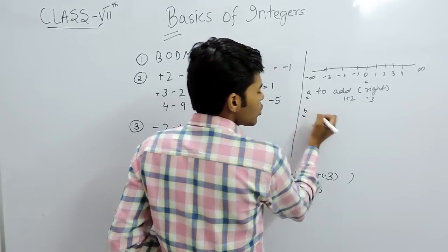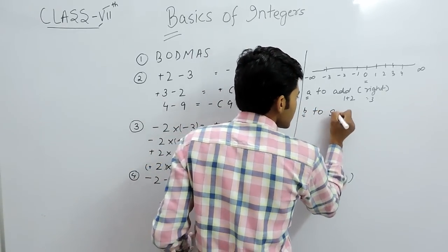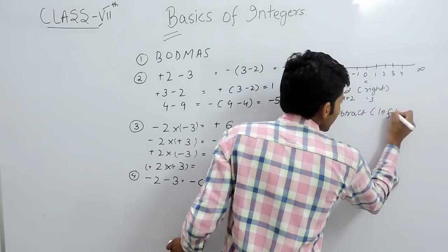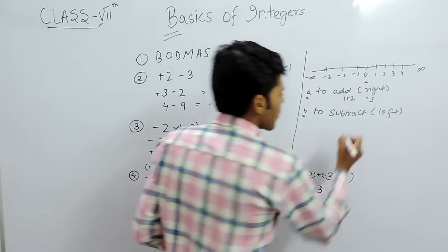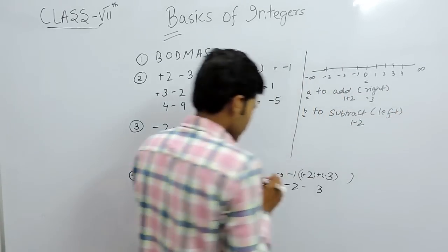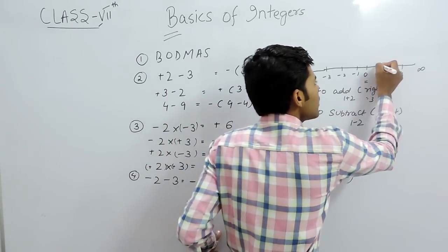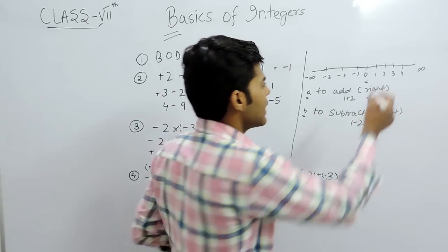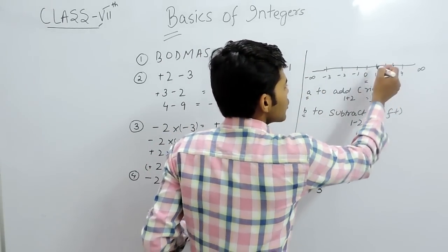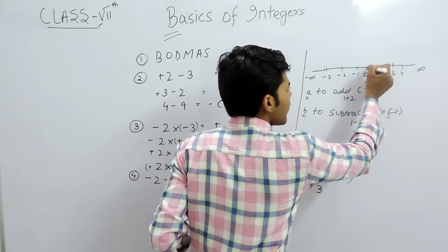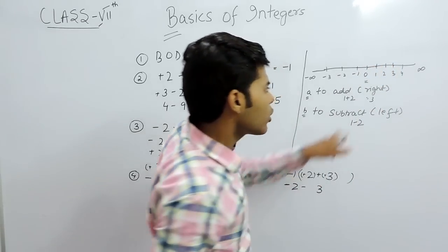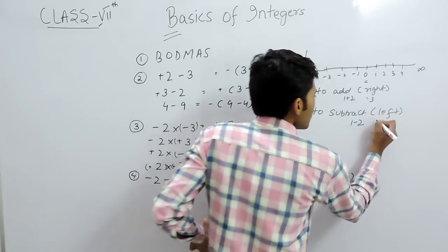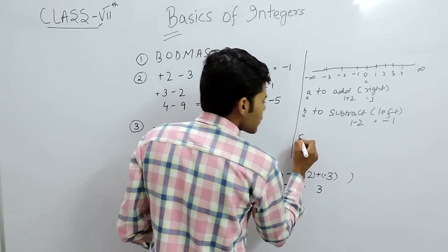To subtract on a number line, we move to the left. For example, for 1 minus 2, we start at 1 and move 2 steps to the left — 1 step and 2 steps. Since 0 is the base value, we reach minus 1, so the answer is minus 1.